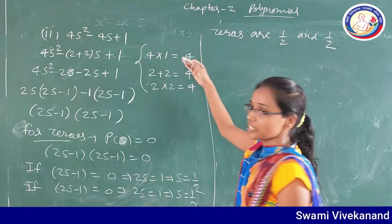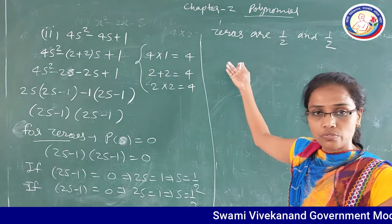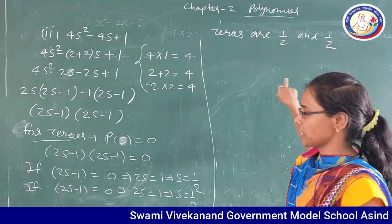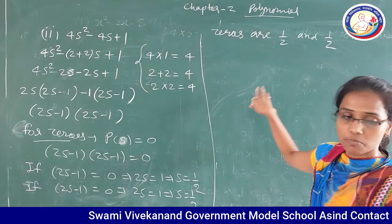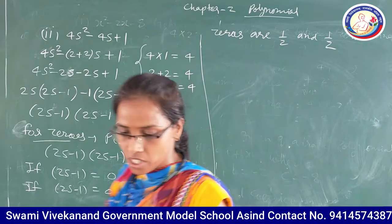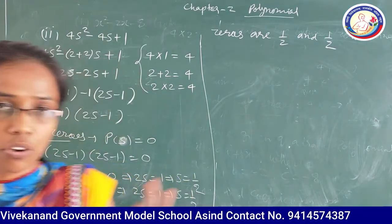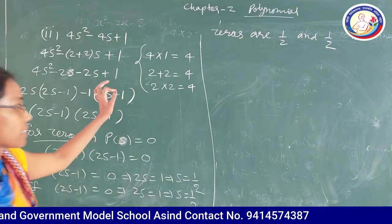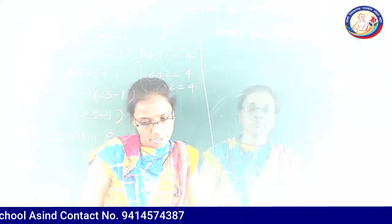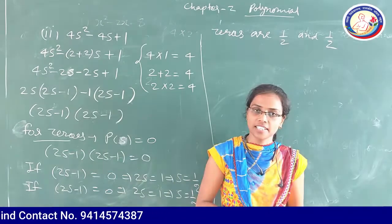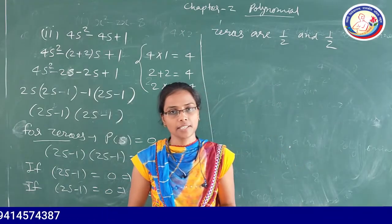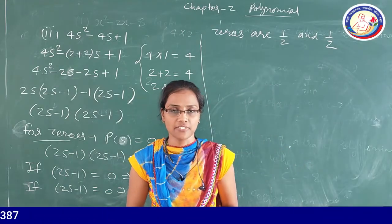For the second part — verifying the relation between zeros and coefficients — do it similarly to how we did question 1. Do it the same way as it is. Today's class ends here. We will meet in the next class. Thank you.